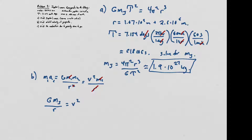Taking the square root of both sides, v equals the square root of G times the mass of Jupiter divided by r. Here r is the same r from Part A, the mass of Jupiter is what we found in Part A, and G is 6.67×10⁻¹¹. Plugging in, this comes out to about 10,903 meters per second.